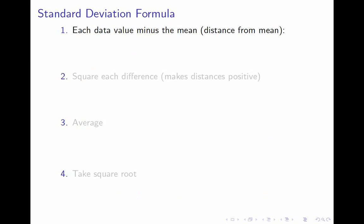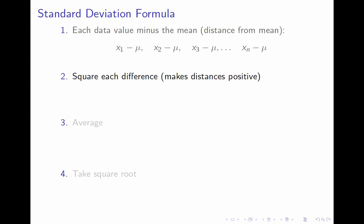Finally, I get to tell you the formula for the standard deviation. Because it's a kind of complicated formula, I'm going to tell it to you in steps. The standard deviation is telling you the typical distance of a data point from the mean. So the first thing we do is find the distance of each data point from the mean — we take each data value minus the mean. We call the data values x1, x2, up to xn, where n is the number of data points. So we take x1 minus mu, x2 minus mu, and so on. The second step is we square each of those distances. Some of these are negative and some are positive, so we square them to get rid of the sign. Now we have (x1 minus mu) squared, (x2 minus mu) squared, up to (xn minus mu) squared.